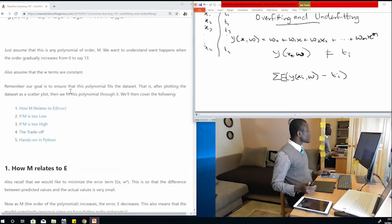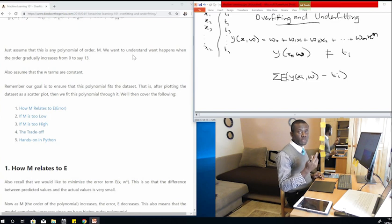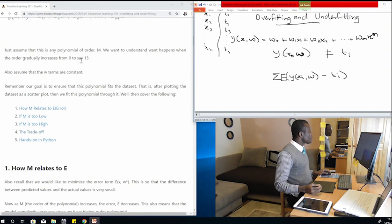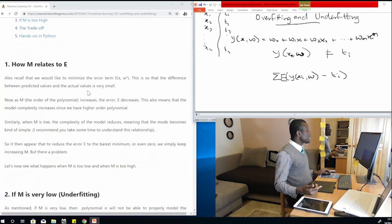Let's assume that this is any polynomial of order M. We want to understand what happens when the order gradually increases from zero to n. For zero, we have a constant value for Y, so Y equals W0 because X to the zero is one. So we have M equals 0, M equals 1, M equals 2. What happens when you continue increasing?